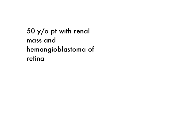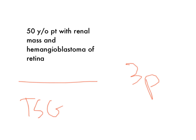Here's the clinical scenario: a 50-year-old patient with a renal mass — it can be bilateral or unilateral — but if you pair it with hemangioblastoma, or it's on chromosome 3P, or it's a tumor suppressor gene that leads to angiogenesis, it's going to be von Hippel-Lindau.